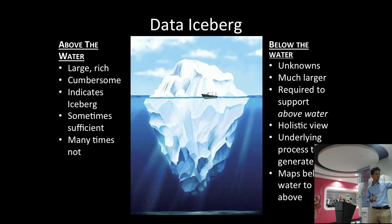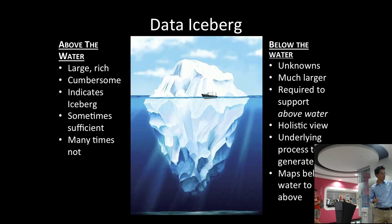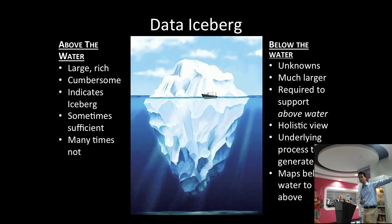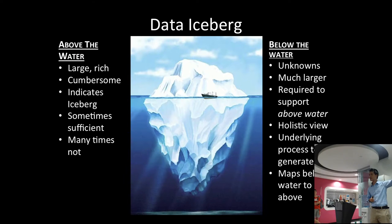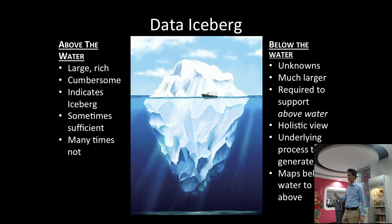If you understand that process and mechanism, then you can map what's underneath the iceberg and say, well, if this is what it looks like underneath, this is what we should see above the water. Then we say — do we see this above the water or not? If we do, then we can conclude that's what's happening underneath. The data above the water is good, but we really need to understand the more holistic view of the iceberg to extract more value out of it.